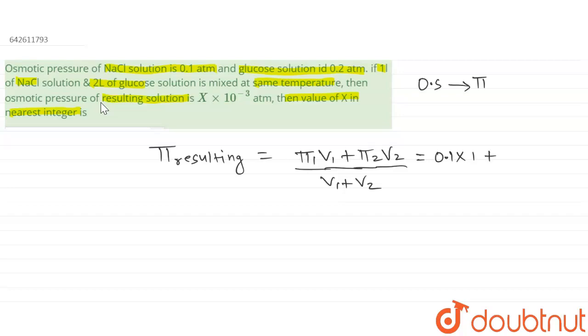π₂ is 0.2 atm which is of glucose into volume, that is given as 2 liters, divided by V₁ plus V₂, that means 1 plus 2. So it will come out to be...